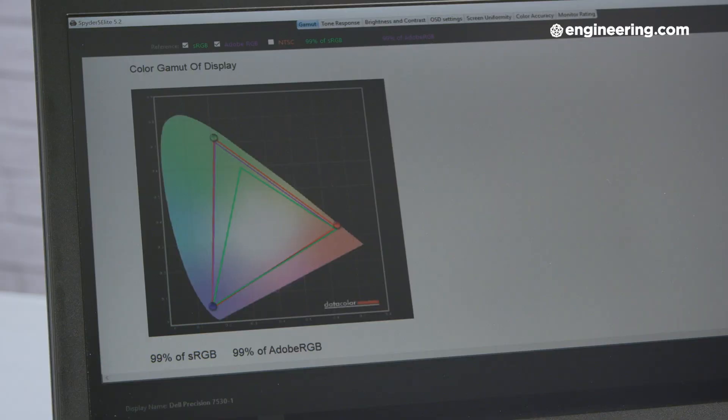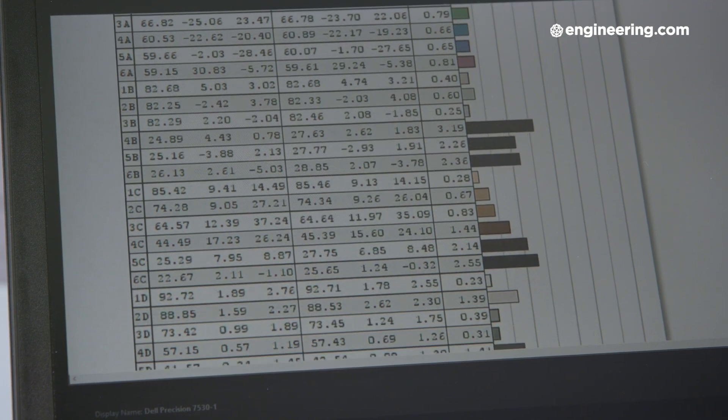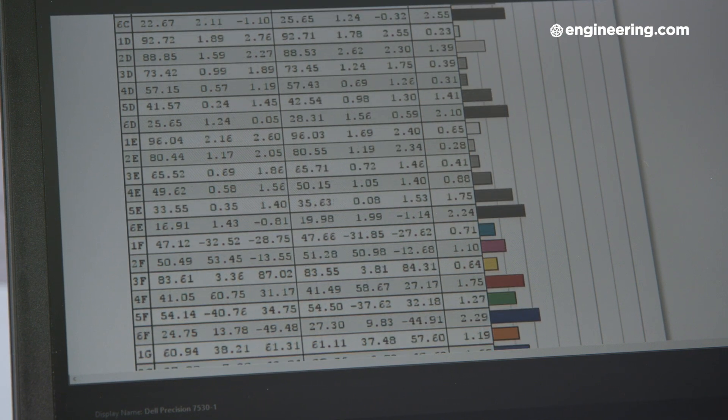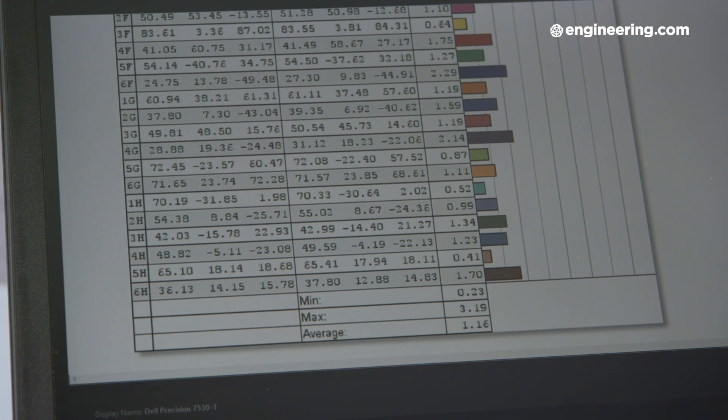The color on our display was quite good, hitting 99% of both the sRGB and Adobe RGB color spaces. And as for accuracy, we measured an average delta E of only 1.16. To put it simply, the colors on the 7530 are pretty much spot on, and pretty much all the colors you'd need are there. That said, if you drop down to a lower resolution display, maybe you want that touchscreen, you'll have to settle for less colors, as only the 4K display is made to cover 100% of Adobe RGB.